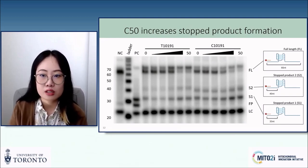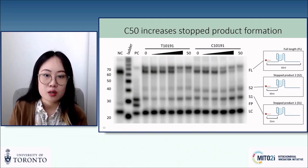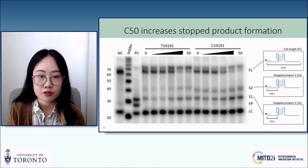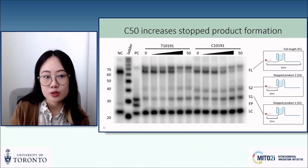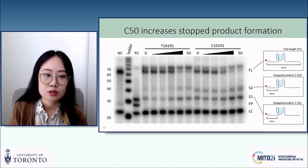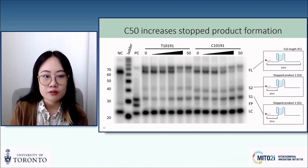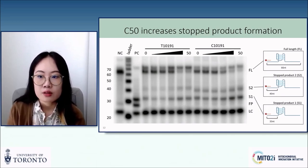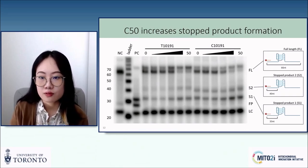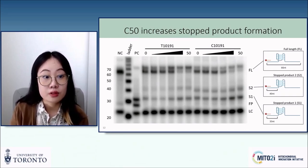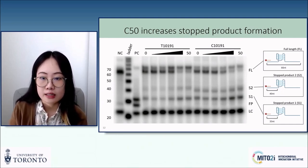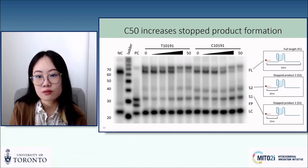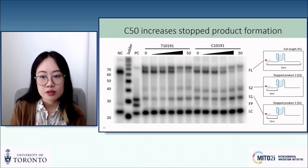Going through the gel slowly: the first lane is a negative control with no G4-forming propensities, so the topmost band represents the full-length product — we see no stop products, then a faint band for leftover free primers, and a strong band just above 20 nucleotides which represents the loading control. The next lane is a ladder, then a positive control optimized for G4 formation, where we see no full-length product and instead a band just above 30 nucleotides which is one of the stop products. The next six lanes are the wild-type T sequence in increasing concentrations of C50, showing a gradual loss of full-length product and an increase in the S1 stop product at higher concentrations. Similarly, with the C oligo extended in increasing concentrations of C50, we see a disappearance of the full-length product and an increase in both stop products.